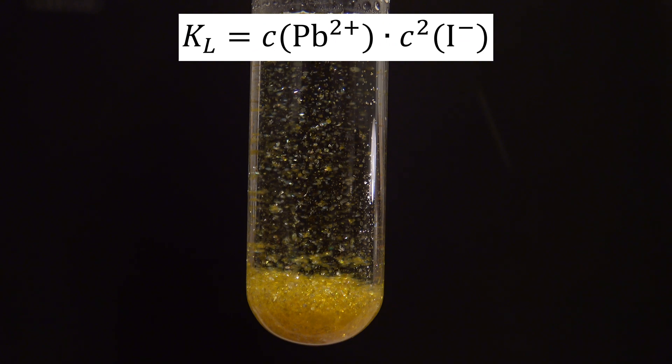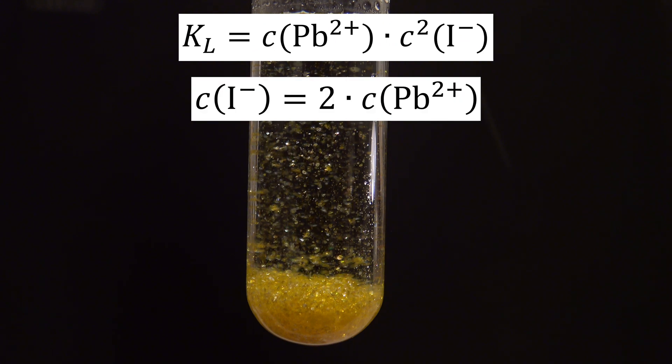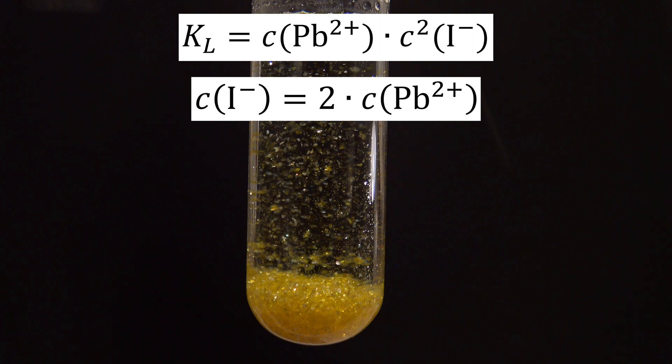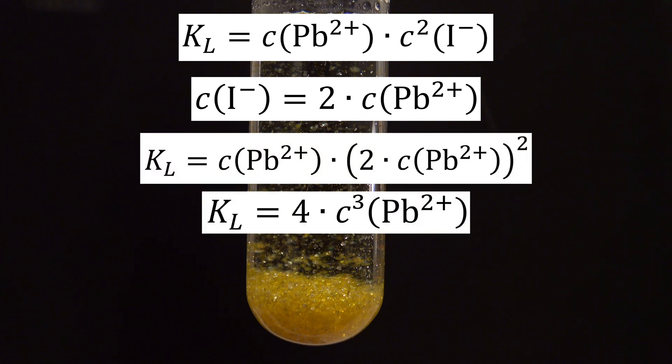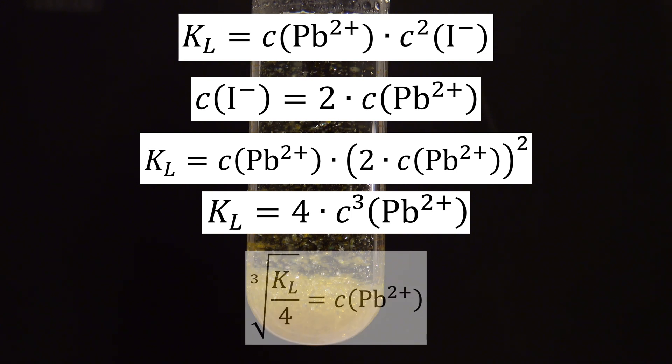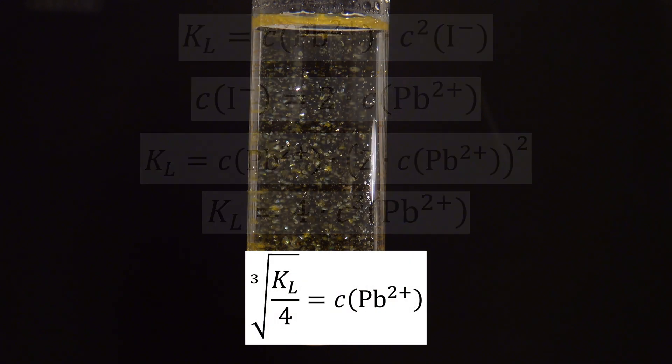In this case, the concentration of the iodide ions is twice the amount of the lead ions. After putting the equation into the solubility product, it can be rearranged, and with the value of the solubility product, the concentration can be calculated.